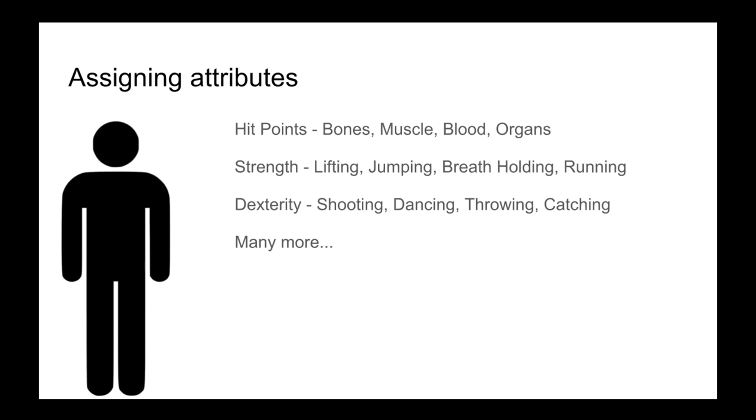So here, we've decided what are the detailed things and what are they represented by. So hit points, we're going to say in our game, represents the health of your bones, your muscle, your blood, your organs, and the other things we saw. Your strength is going to represent your ability to lift, jump, hold your breath, run, and some more things. Dexterity will represent shooting, dancing, throwing, and catching. Now, notice there's a weird bit here that's a little bit ambiguous. Running and dancing are pretty closely related, and yet here, they're governed by different attributes. Why is that?